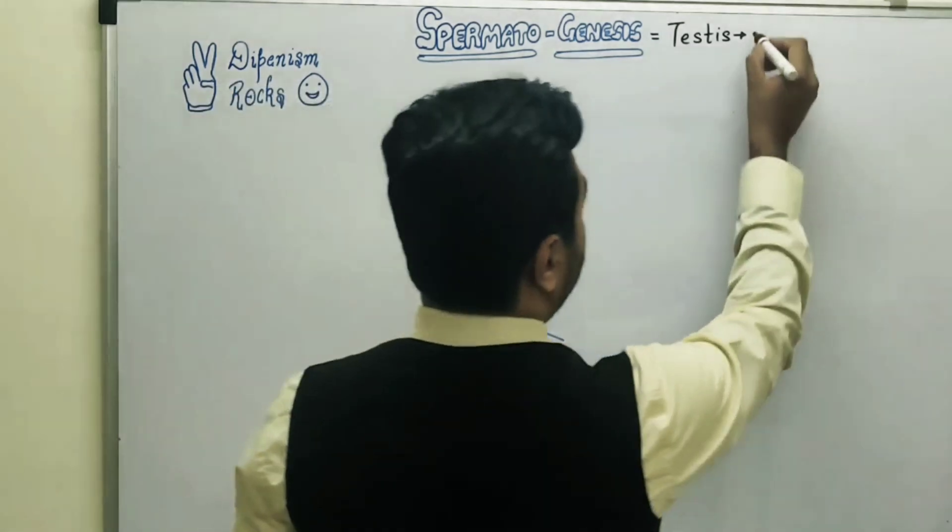That is how four spermatozoa are produced. For MCQs: if there are 100 primary spermatocytes, how many sperm cells are produced? One primary spermatocyte produces four sperm cells, so 100 primary spermatocytes produce 400 sperm cells. However, one secondary spermatocyte produces only two sperm cells, so 100 secondary spermatocytes produce 200 sperm cells.